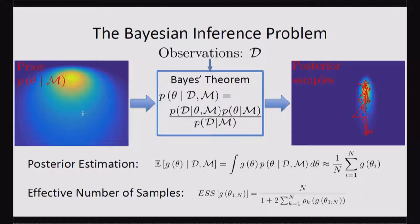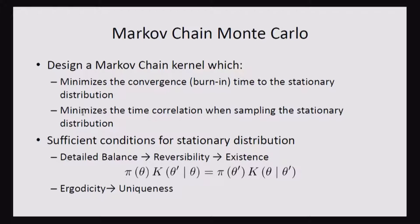So within MCMC, we're interested in designing this kernel, which is the transition probability of moving from one state to another. And we want this Markov chain to have properties that we want its convergence to be very fast to a stationary distribution.